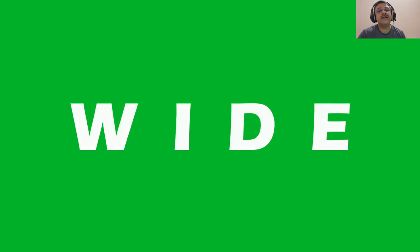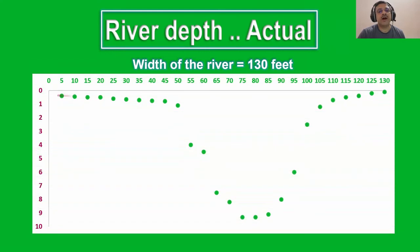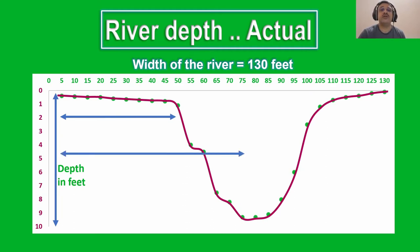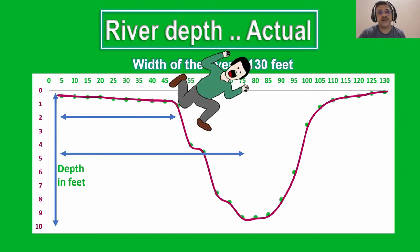But when we plot this data on a graph using a smoothened line instead of points, the surprise springs at us. You will notice from this graph that though you had waded in the water for some distance from the shore, you had not done so far enough into the riverbed. If you had chosen to cross this river, you, your family and your friends would have been in for a disaster.